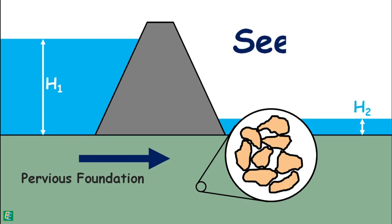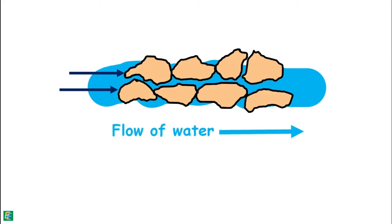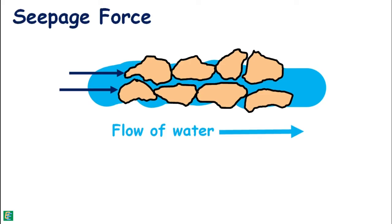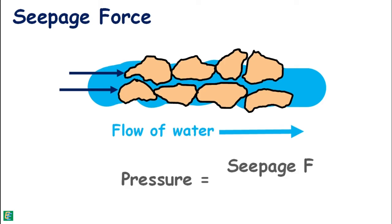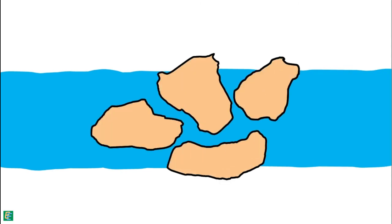This phenomenon of water movement through the soil is called seepage. As the water flows through the soil, it exerts a drag on the soil particles in the direction of its motion. This force applied by the water on the soil particles is called seepage force, and the pressure developed in the soil because of it is termed seepage pressure.